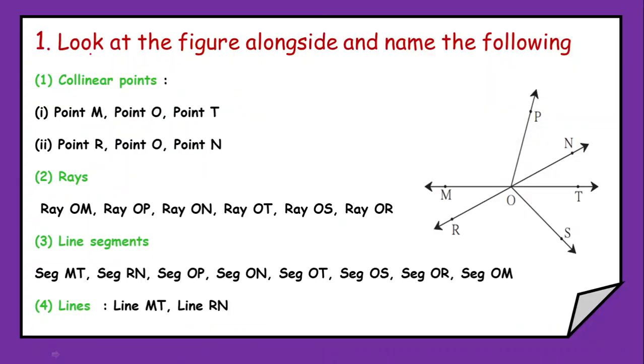So here we have the first question as, look at the figure alongside and name the collinear points. Now what are the collinear points? Whenever three or more points lie on the same line, that will be termed as collinear points.